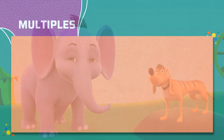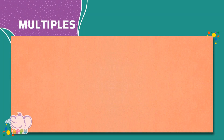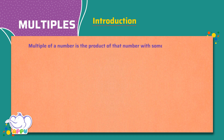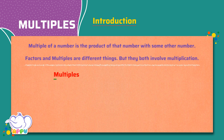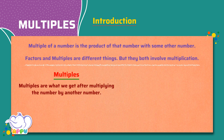Multiples. Introduction. A multiple of a number is the product of that number with some other number. We have already learnt what factors are. Factors and multiples are different things, but they both involve multiplication. Multiples are what we get after multiplying the number by another number. Let's look at examples of multiples.